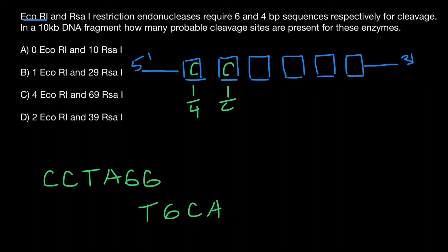The probability of finding thymine in the next position is one out of four. Adenine is also one out of four, and guanine is one out of four — and guanine again one out of four. This is a six-base recognition site. I took that sequence just from my head; it's not the exact sequence this endonuclease recognizes, but it illustrates the theory.